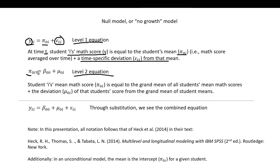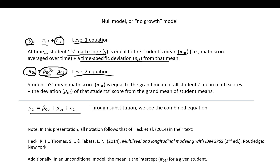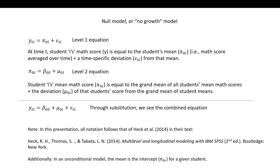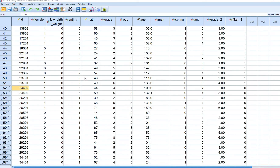For our level 2 equation, the student's mean math score averaged over time equals the average of all students' math scores computed over time, plus that student's deviation from the grand mean. Through substitution, substituting the level 2 expression for π into level 1, we get our combined equation.